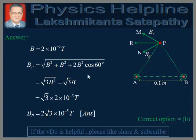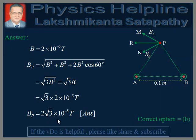Since cos 60 equals 1/2, the 2 and 1/2 cancel, giving us root over B-squared plus B-squared plus B-squared, which is root over 3B-squared, equal to root-3 into B. Since B equals 2 into 10 to the power minus 5 Tesla, BP equals 2 root-3 into 10 to the power minus 5 Tesla. This is the answer, and the correct option is B. Thanks for watching — if the video is helpful, please like, share, and subscribe.